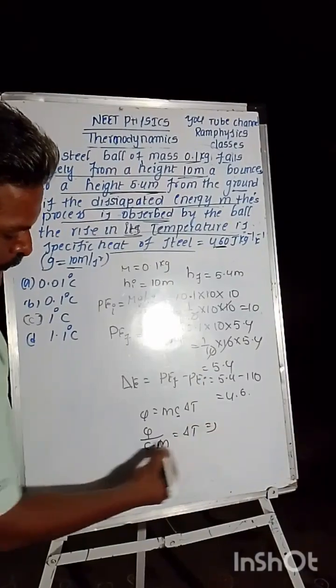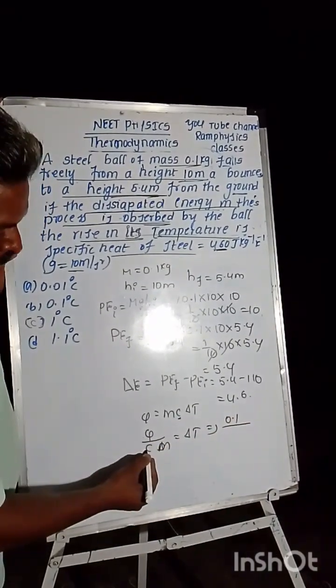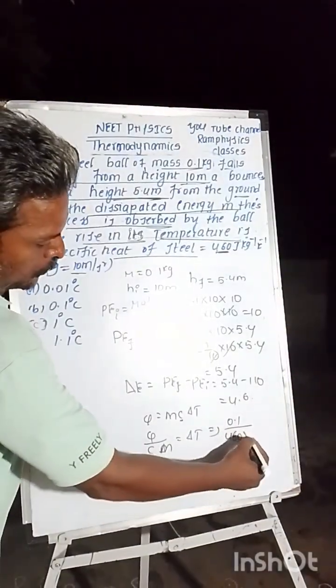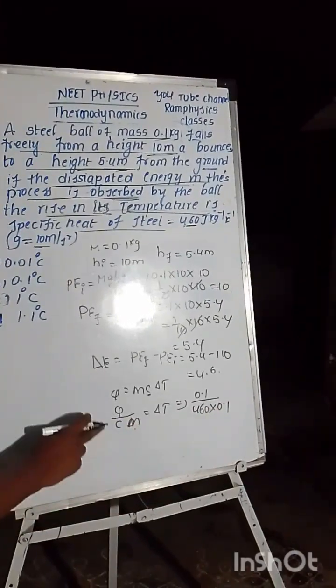Q is equal to, if Q that is 0.1 by specific heat 460 into mass 0.1.